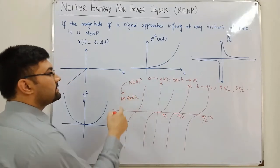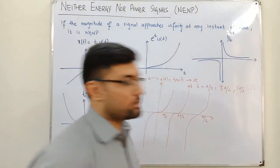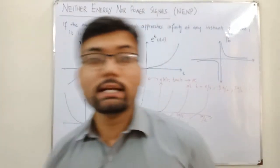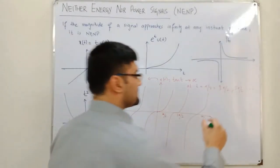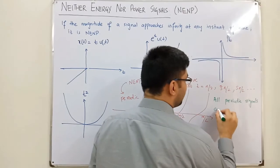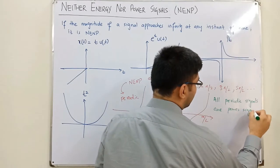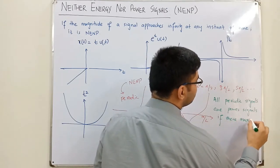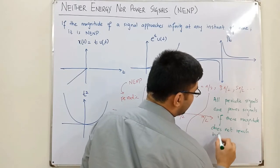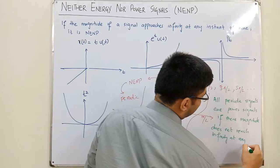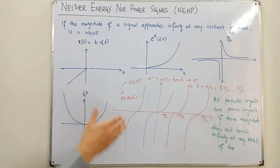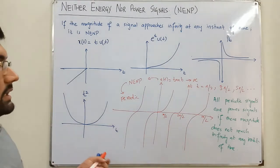But we also know that tan(t) is a periodic signal, and in the previous video I said that all periodic signals are power signals — which seems to contradict this. The complete and corrected statement is: all periodic signals are power signals if and only if their magnitude does not reach infinity at any instant of time. Since tan(t) reaches infinity at certain instants, it is neither energy nor power, not a power signal.